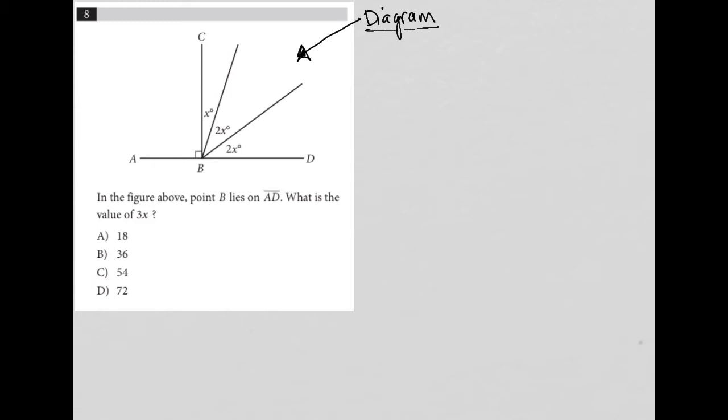We see here that we have perpendicular lines. We have line segment BC and we have line segment AD, and those two lines are perpendicular to each other because we see this right angle formed at the point where they intersect, and we have angles that are x degrees, 2x degrees, and another 2x degrees.